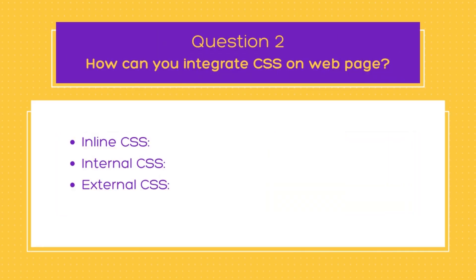Moving on to the next question: how can you integrate CSS on a web page? CSS can be integrated into a web page using several methods: inline CSS, internal CSS, and external CSS. In inline CSS, you add CSS directly to the HTML element using the style attribute. In internal CSS, you add CSS within the head section of the HTML document using the style tag. In external CSS, you create a separate CSS file with a .css extension and link it to the HTML document using the link tag within the head section.